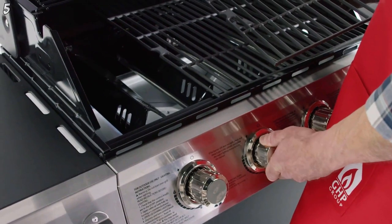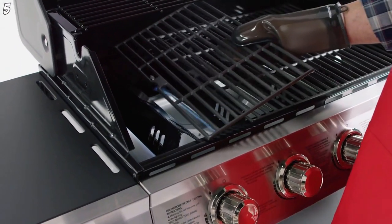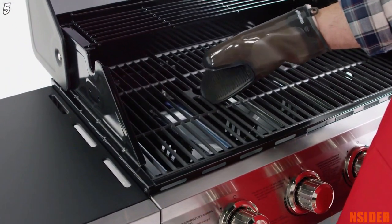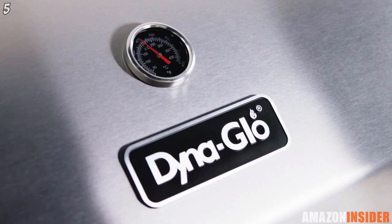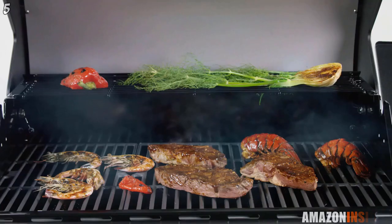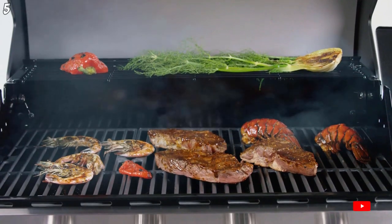The easy-to-maintain porcelain-coated cast-iron cooking grates retain heat for proper searing to lock in food's natural juices. A built-in temperature gauge on the hood indicates when you've reached the perfect heat for optimal cooking execution.